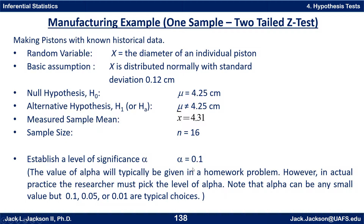We need to establish a level of significance alpha. Let's say alpha is 0.1, meaning we are comfortable making a Type I error 10% of the time, but not more often than that. The value of alpha will typically be given in a homework problem; in actual practice, the researcher picks it or it's set by some industry standard. Note that alpha can be any small value, but 0.1, 0.05, or 0.01 are typical choices.